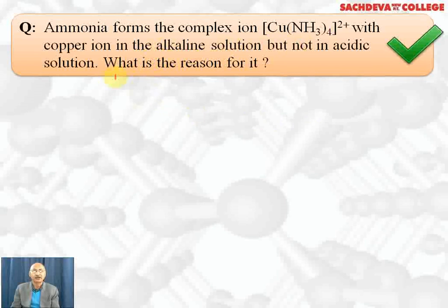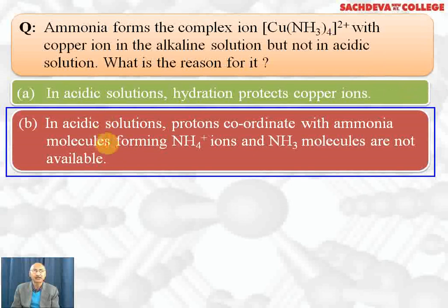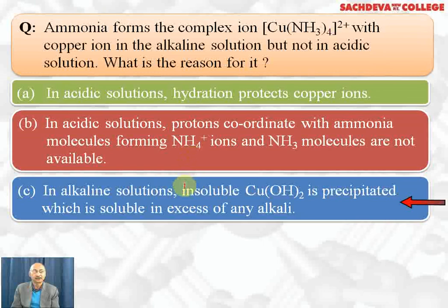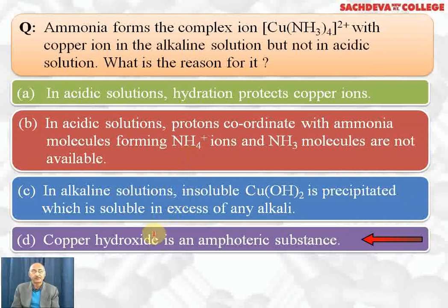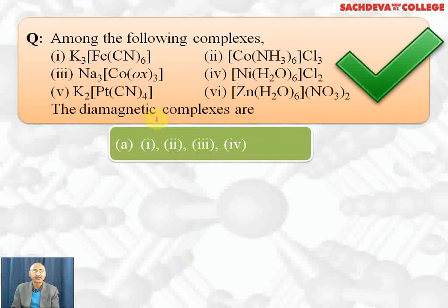Ammonia forms the complex ion [Cu(NH3)4]²⁺ with copper ions in alkaline solution but not in acidic solution. The reason is that in acidic solution, protons coordinate with ammonia molecules forming NH4⁺ ions, so ammonia is not available to act as a ligand — this is the correct answer, option B. Option C is incorrect because copper hydroxide cannot be formed under these conditions, and option D is incorrect because it is basic.